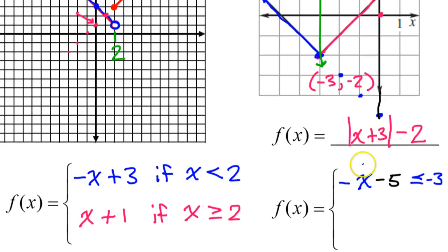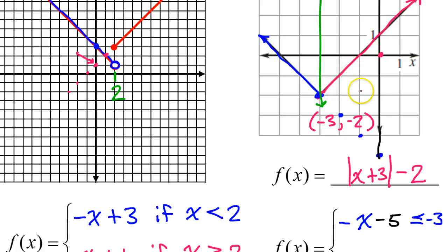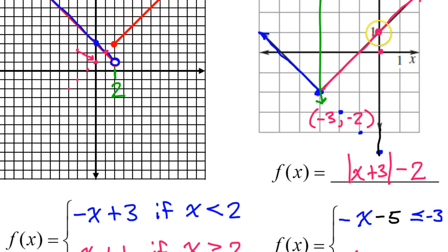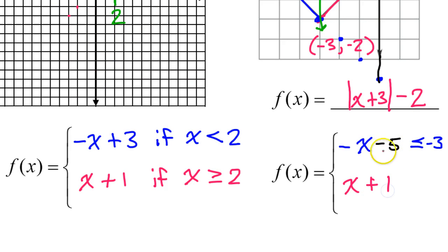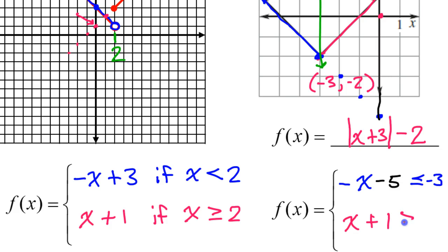Now the red piece of the piecewise function has a slope of positive one — it's up one over one, so that gives me just x. The y-intercept is right here where it touches the y-axis at one, so that's x plus one. Because this is to the right of the axis of symmetry at negative three, I'm going to say greater than negative three. It doesn't matter which one of these you make 'or equal to' — just make sure one of them is or equal to and one of them is not. Don't do both.